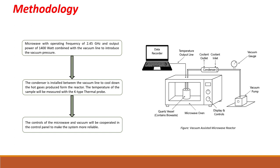As you can see in the figure, the proposed reactor will be composed mainly of a microwave unit and a vacuum unit, with secondary parts like a temperature probe, condenser, connectors and pipes. The microwave installed has an operating frequency of 2.45 GHz and an output of 1400 Watts, and it is combined with the vacuum line to introduce vacuum pressure. The condenser is installed between the vacuum line to cool down hot gases produced from the reactor. The temperature of the sample will be measured with a K-type thermoprobe. The controls of the microwave and vacuum will be integrated in a control panel to make the system more reliable.